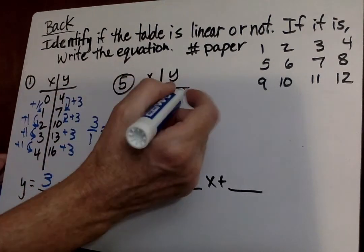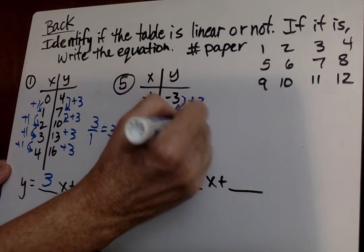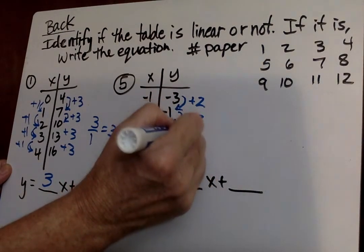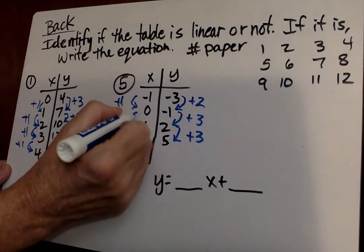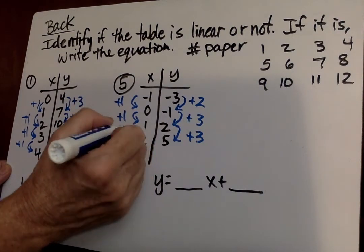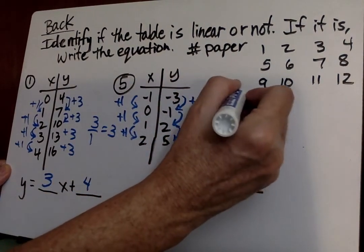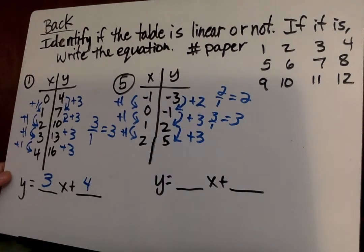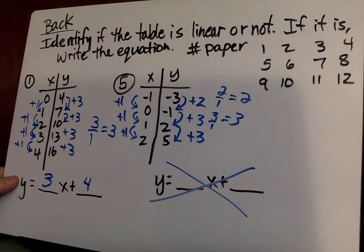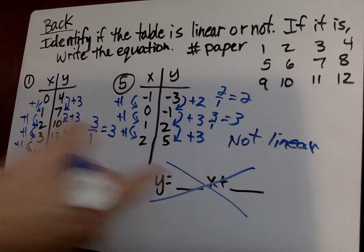Now we're going to go down to number 5. Say from negative 3 to negative 1, I added 2. Negative 1 to 2, I added 3. So that's a little bit different. 2 to 5, I added 3. Then I go from negative 1 to 0, I added 1. 0 to 1, I added 1. And 1 to 2, I added 1. So this rate of change is 2 over 1 equals 2. This one is 3 over 1 equals 3. And this one, actually, you can stop right there. You can say this rate of change is 2, and this one's 3. So if they're different rates of change, it is not linear. So make sure you're showing your work, and we just write not linear. And you don't need to worry about writing an equation.